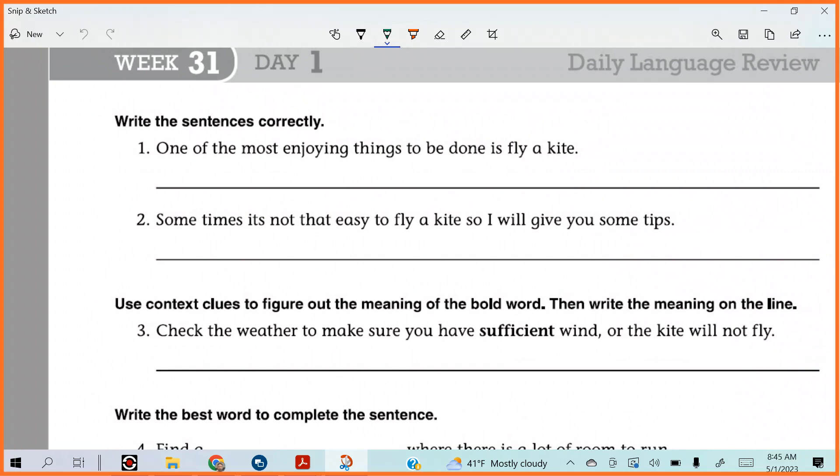First of all, what's our mantra, Nate? What do we do? We read, then we edit, then we write it out. So let's take a look. It says one of the most enjoying things to be done is fly a kite. I think we need a different suffix. Let's go with enjoyable. You want to give me that spelling? That's correct.